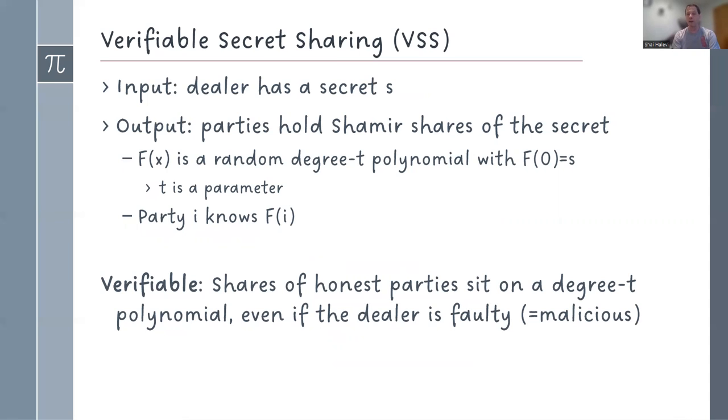This is verifiable in the sense that shares of the honest party sit on a degree t polynomial and therefore can be reconstructed later, even if the dealer is faulty. And faulty here is malicious. The faulty dealer can do whatever they need.